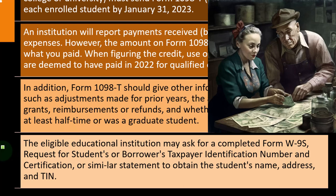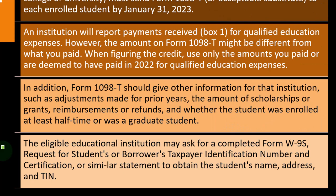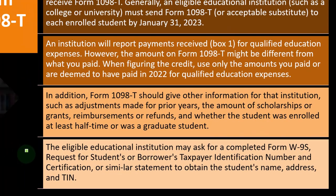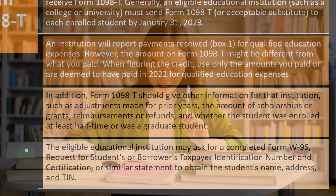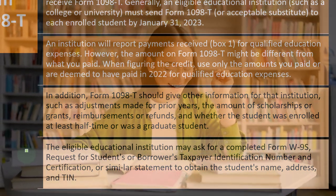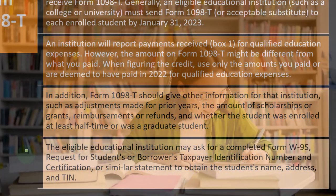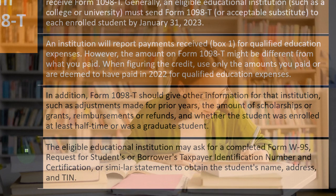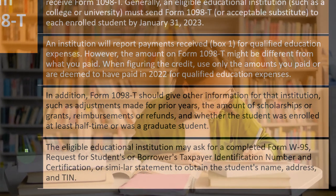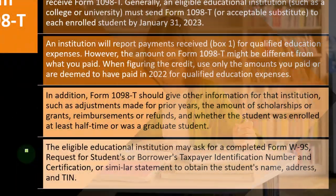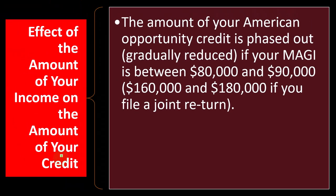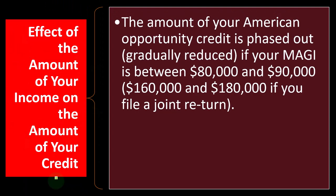The eligible educational institution may ask for a completed Form W-9-S — Request for Student's or Borrower's Taxpayer Identification Number and Certification — to obtain the student's name, address, and TIN. You have to give them that information in order for them to populate it on the 1098-T.